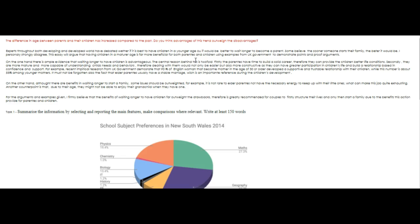Some believe the sooner someone starts their family, the better it would be — 'better' with two Ts. I personally strongly agree — double L. This essay will argue that having children at a mature age — 'more mature' is how we say this — is far more beneficial for both parents — no E — and children, using examples from UK government to demonstrate points and prove — P-R-O-V-E — arguments.